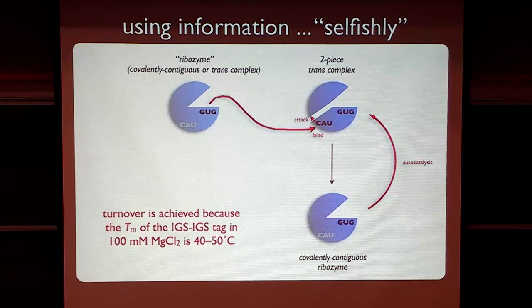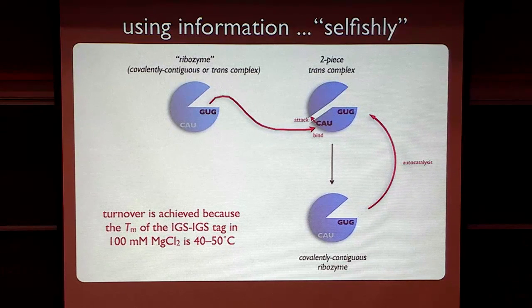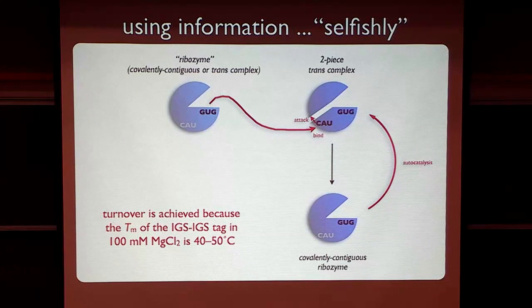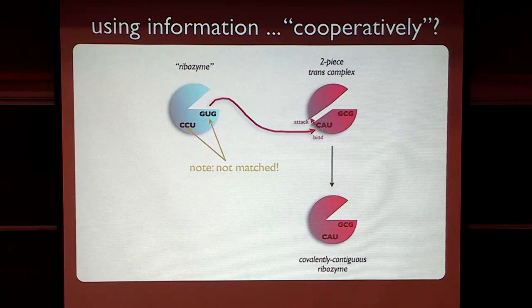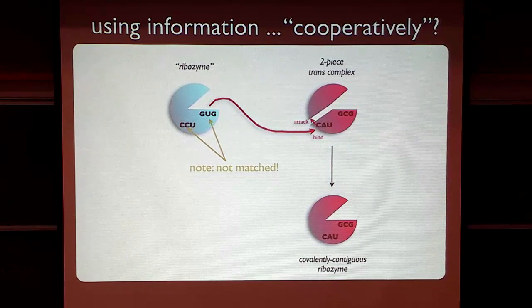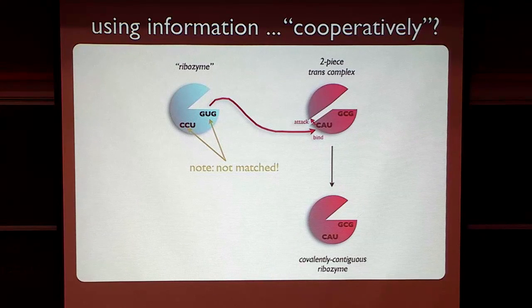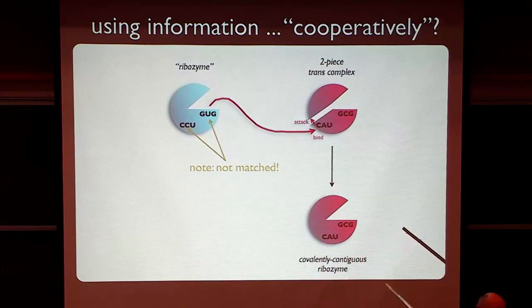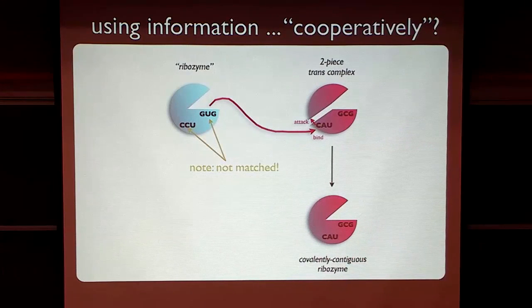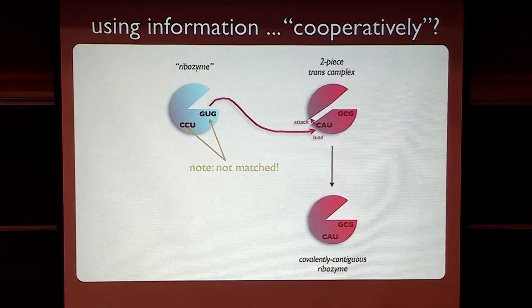What I want to do is I want to consider what would happen if we force this system to cooperate. What if we made the IGS and its tag to be non-matching in any particular pair, in any particular ribozyme?